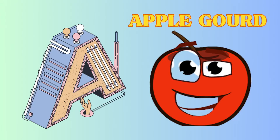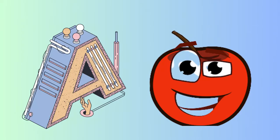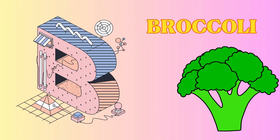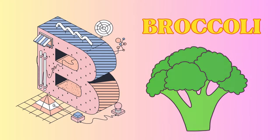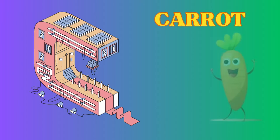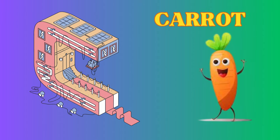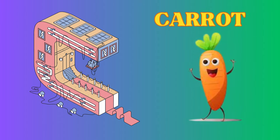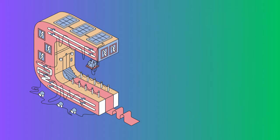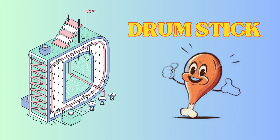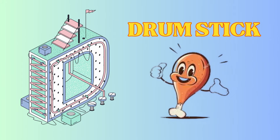A is for apple gourd, apple gourd. B is for broccoli, broccoli. C is for carrot, carrot. D is for drumstick, drumstick.